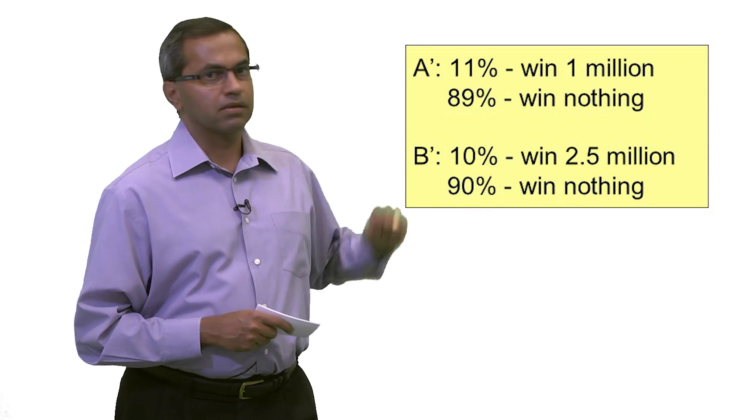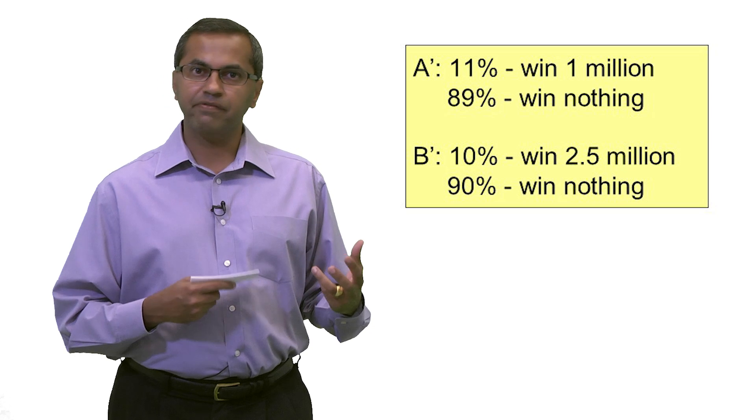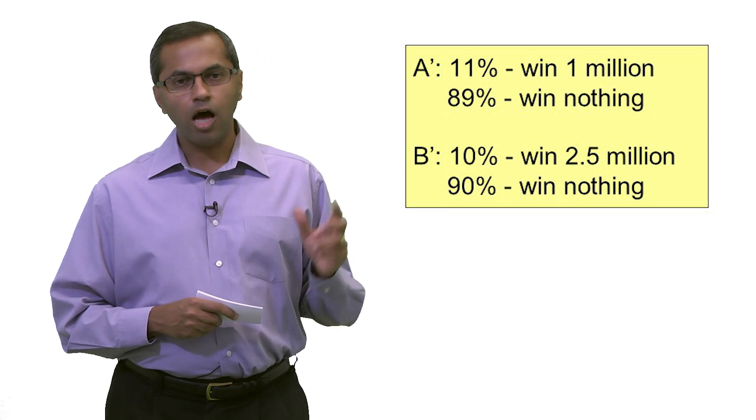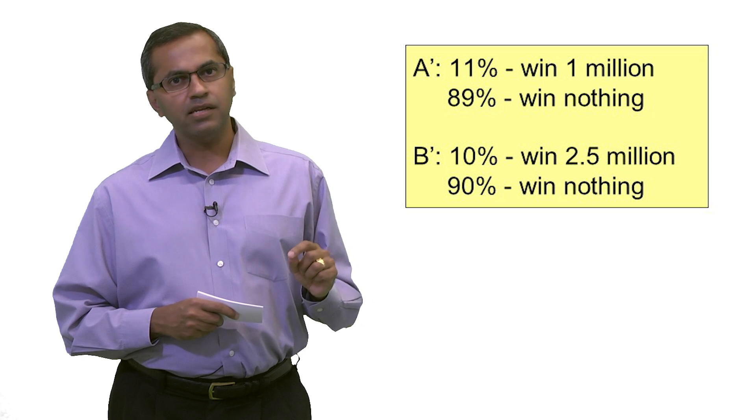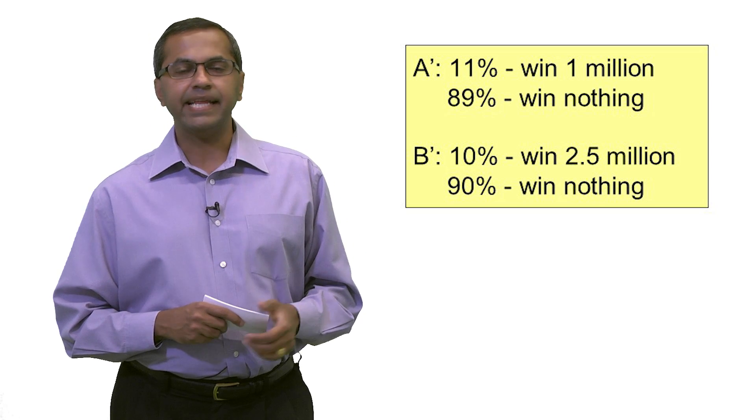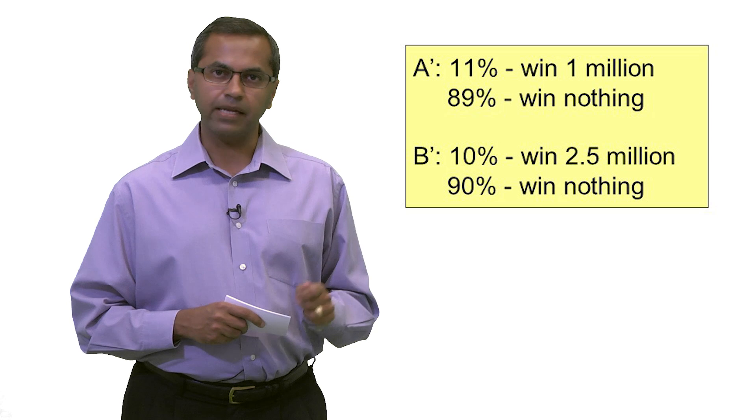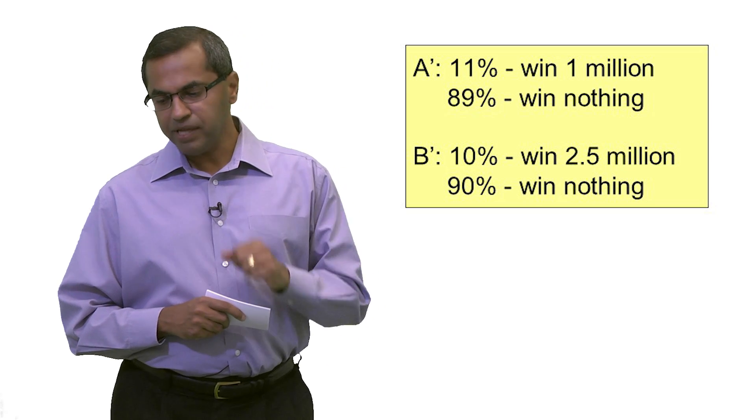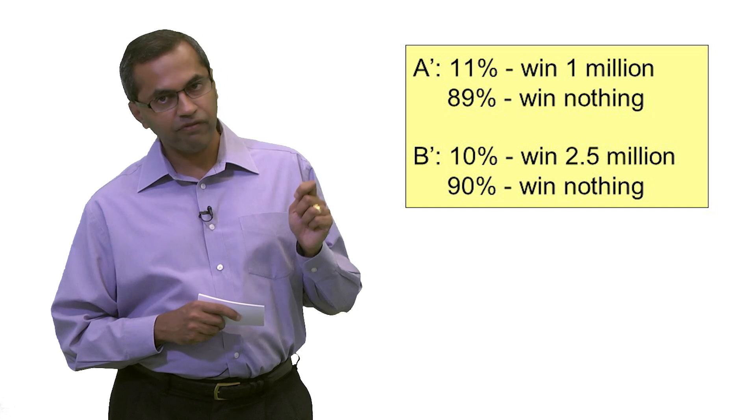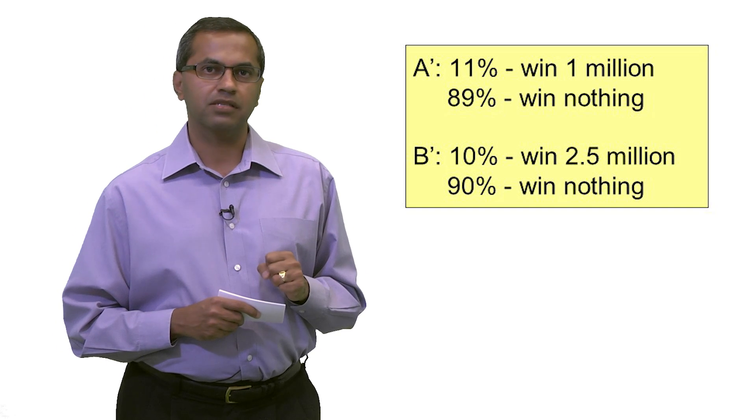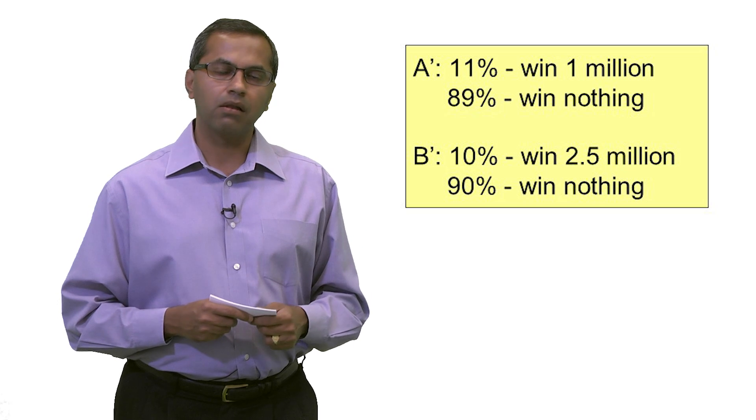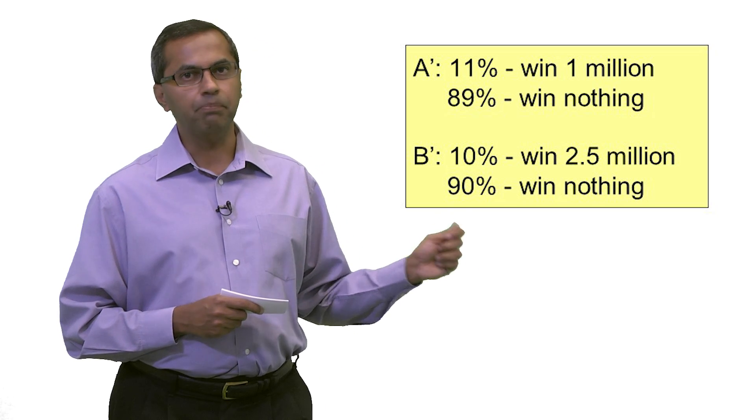Now, let's look at the second problem. And again, if you're choosing here between two options, we're going to call it A and B. In option A, we have a lottery in which there's an 11% chance of winning 1 million and an 89% chance of winning nothing. In option B, we have a second lottery, 10% chance of winning 2.5 million, and a 90% chance of winning nothing. Now, as you might expect, a lot of people prefer option B.